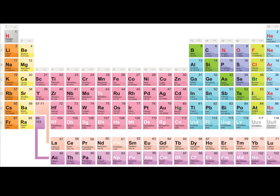The periodic table of elements is used to organize over 110 known elements. The periodic table is organized in rows by increasing atomic number. The atomic number of each element is listed at the top of the element square in the periodic table.